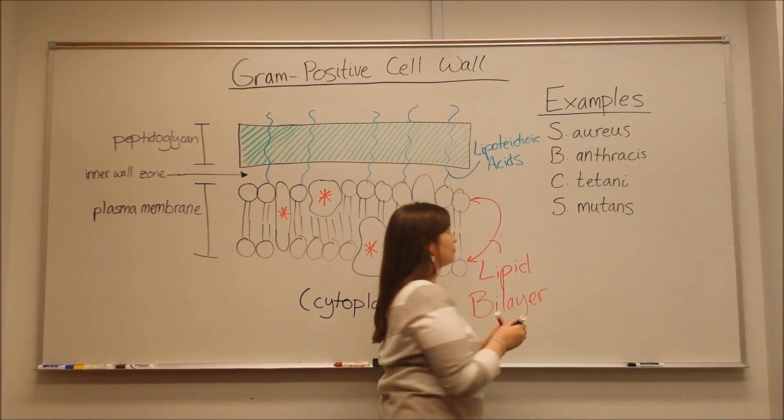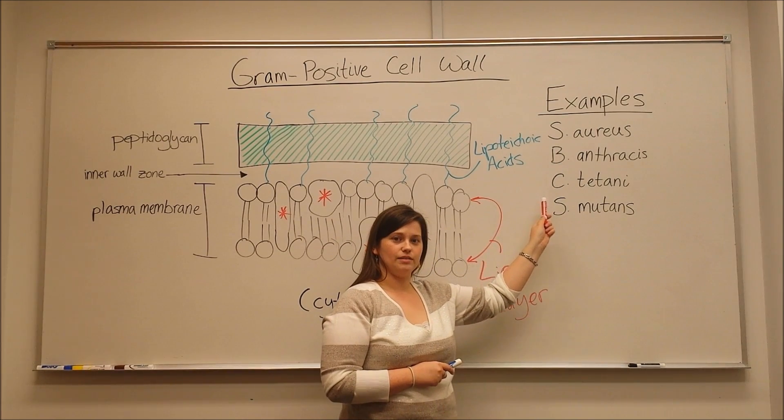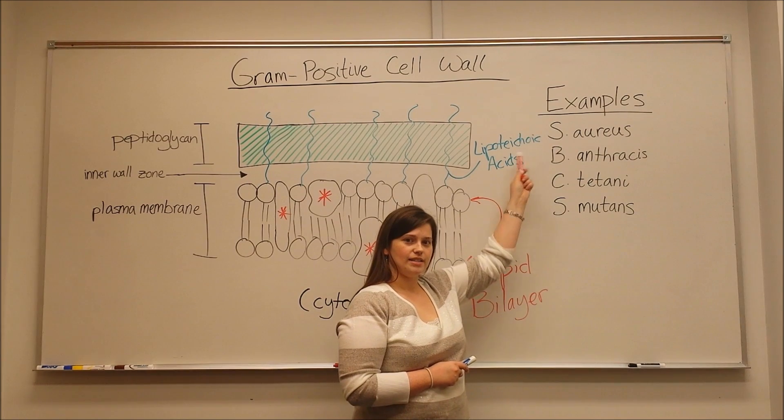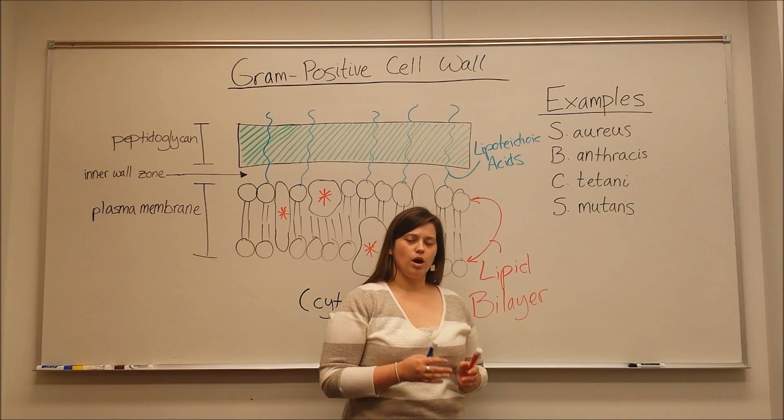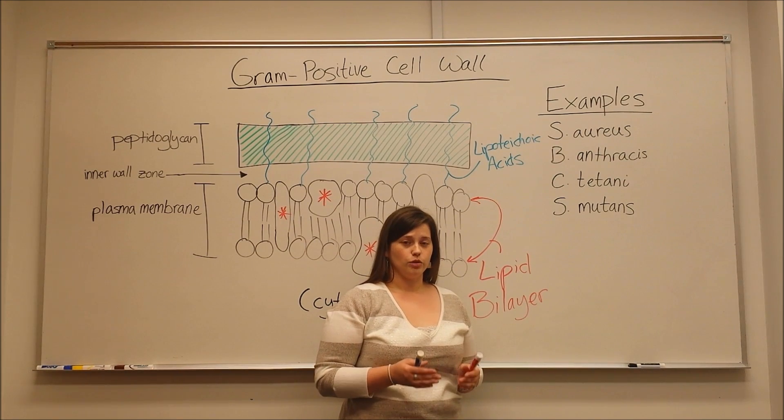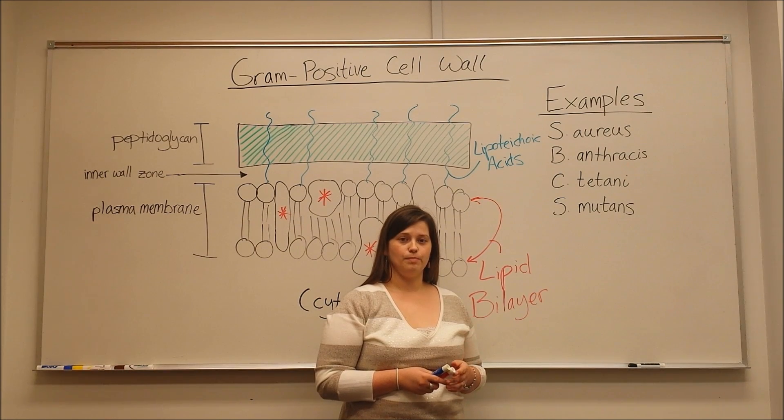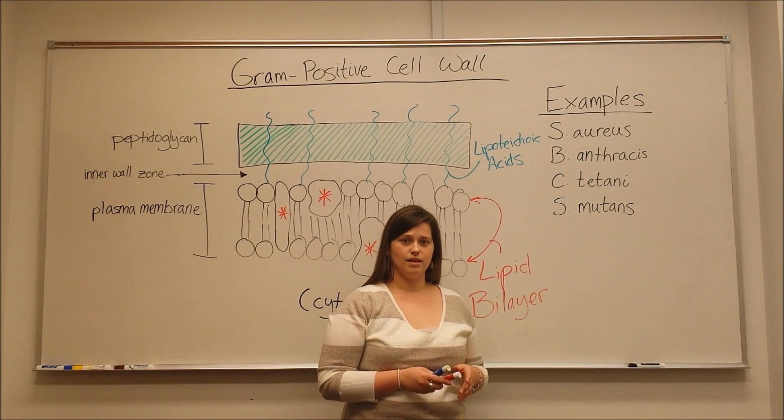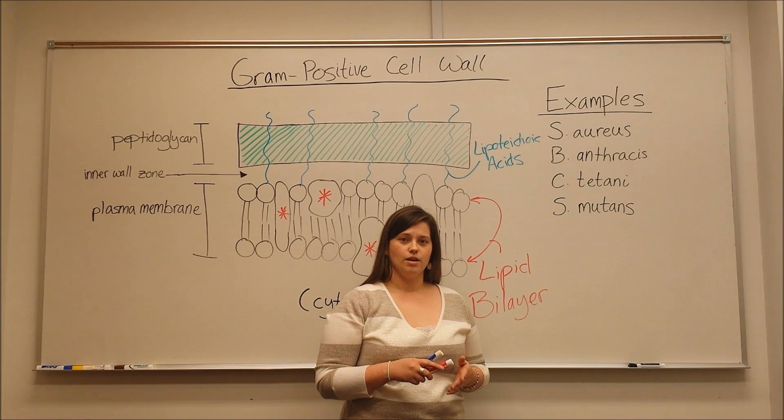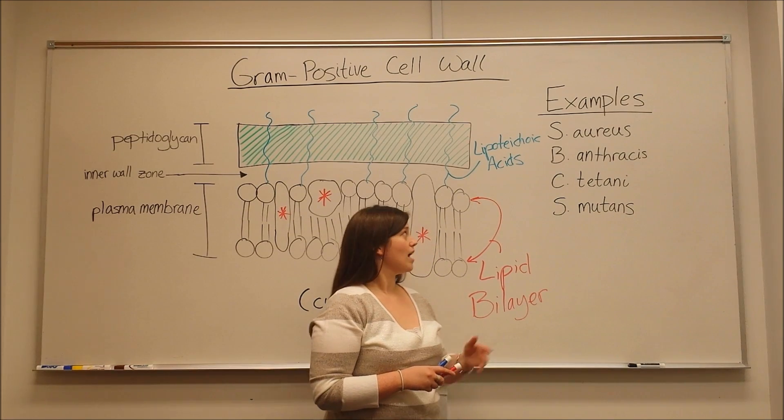And now, if we look at, these are some common examples of gram positive bacteria that I'm sure you've heard of. Staphylococcus aureus can actually be a part of the normal human bacterial flora. Actually, a majority of humans have staph in their nose and on their skin. But it can also cause disease. Specifically, some strains of staph aureus can cause food poisoning. And they can also cause infections of the skin and of the respiratory tract.